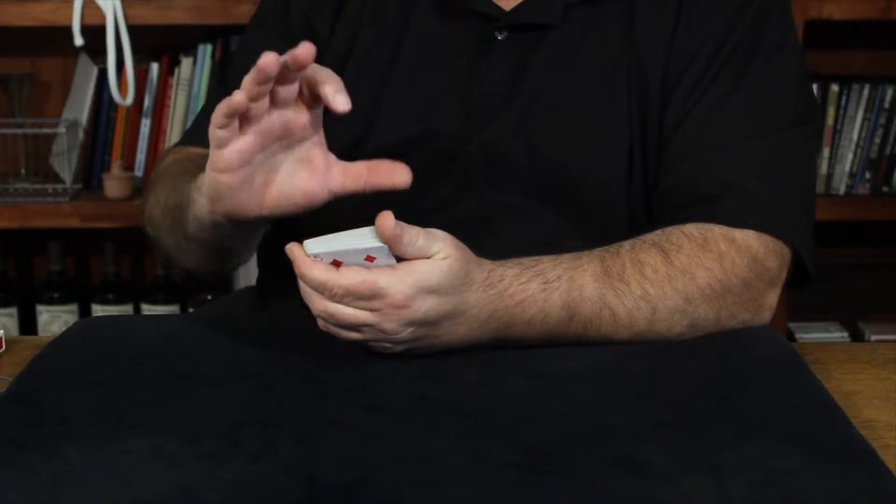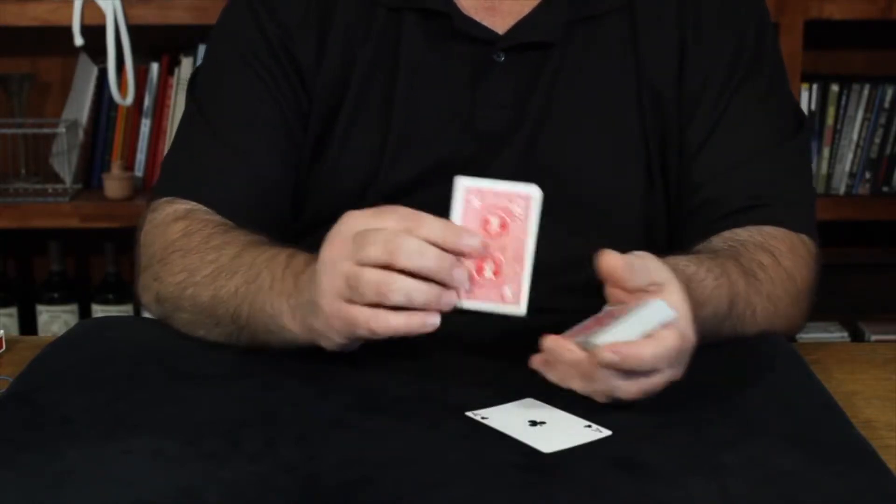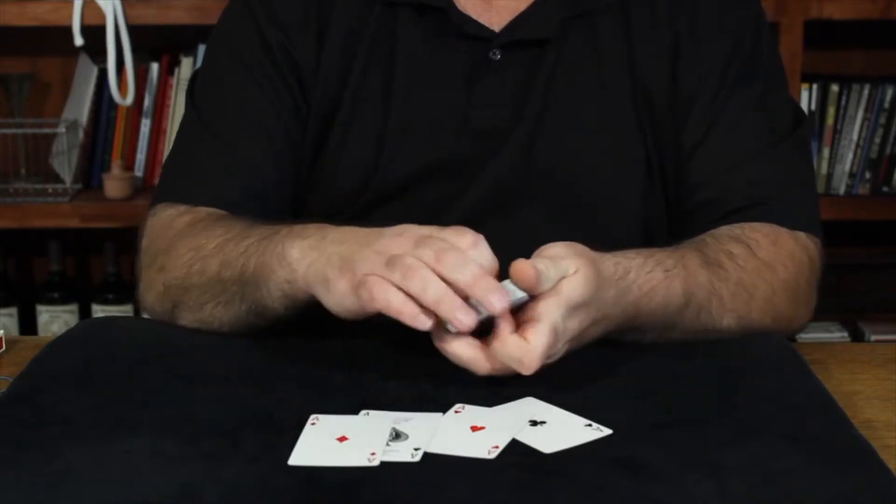The deck is squared. You take the deck at that point, you can hand it to the spectator or you can show them that all four aces have returned to the top.